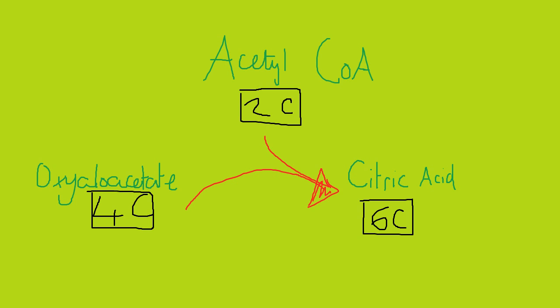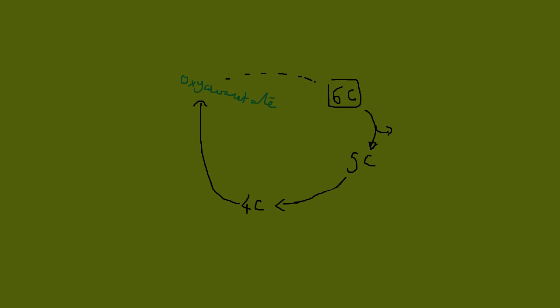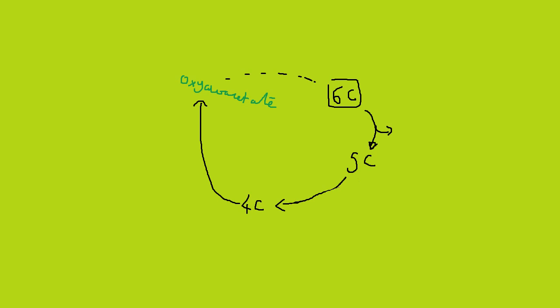These are the only three compounds in the Krebs cycle that you'll need to know in any great detail. In reality, the rest of the Krebs cycle is just a very convoluted way of regenerating oxaloacetate from citric acid, producing ATP and reduced electron carriers along the way.